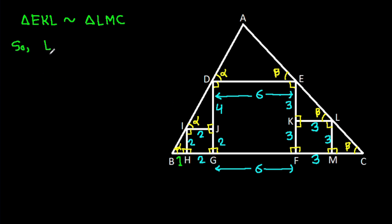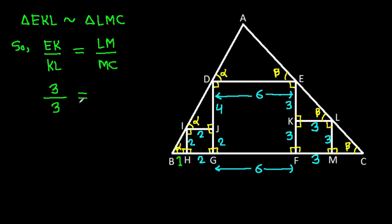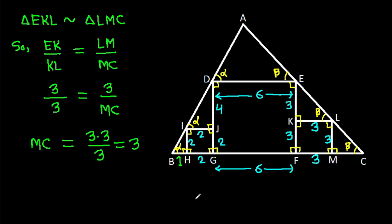So EK over KL equals LM over MC. And EK is 3 over KL is 3, equals LM is 3 over MC. So MC = (3 × 3) / 3 = 3. So MC is 3.